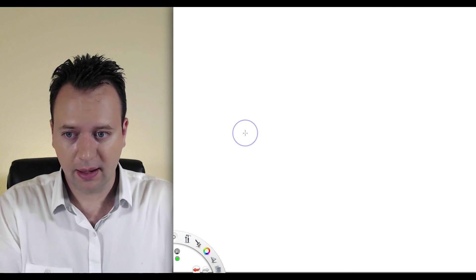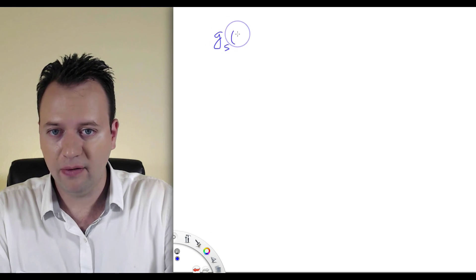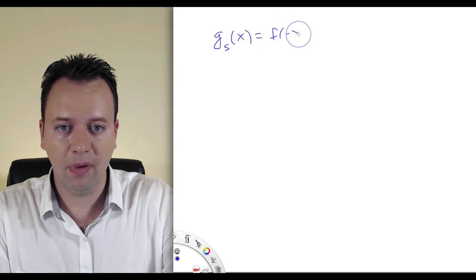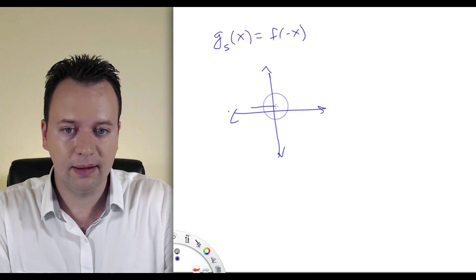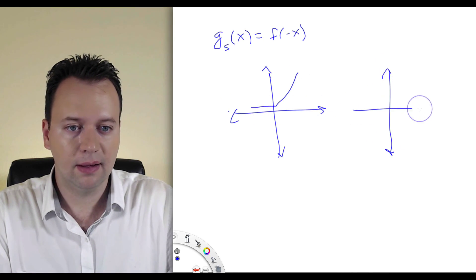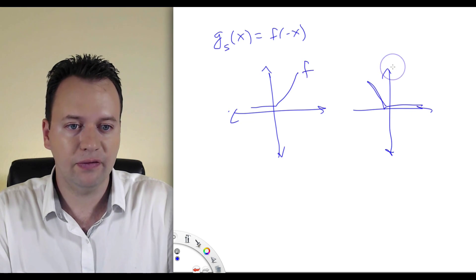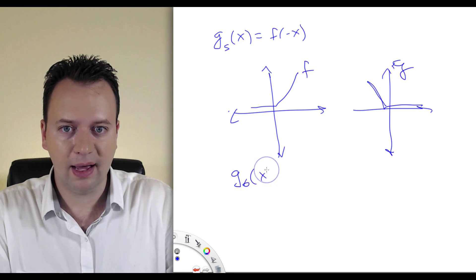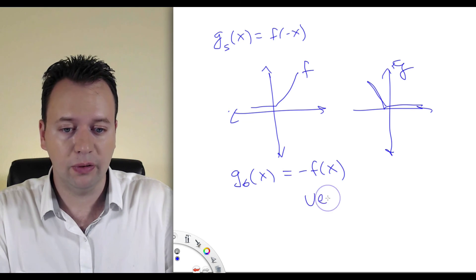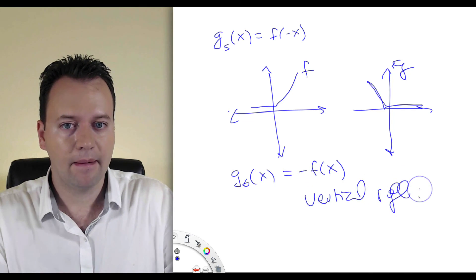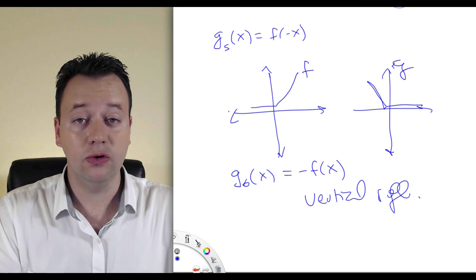Finally, reflections: g5(x) = f(−x) — since the negative is acting on the inside variable — is a horizontal reflection about the y-axis. And g6(x) = −f(x) — since the negative is on the outside — is a vertical reflection about the x-axis. Those are six basic ways to create a new function from an old function.